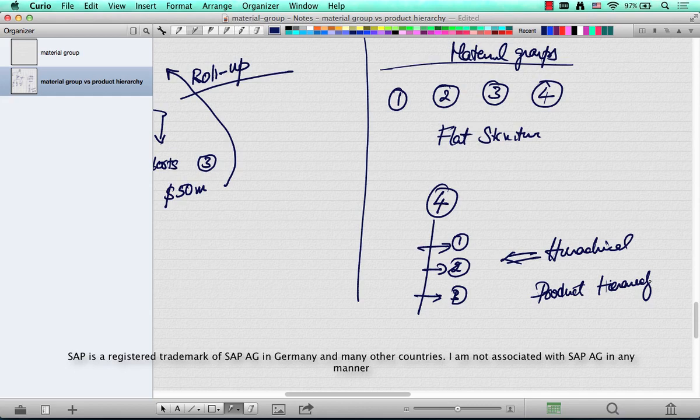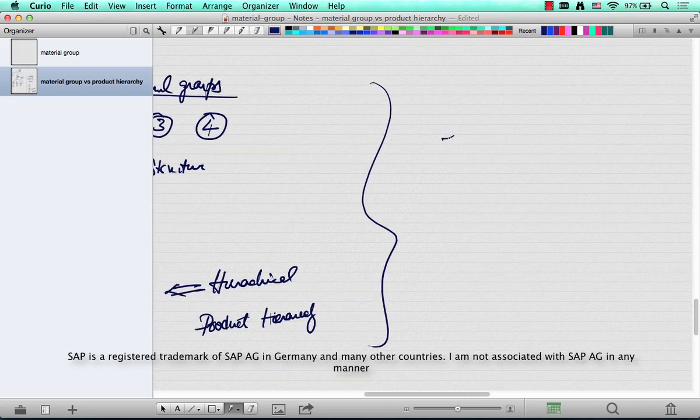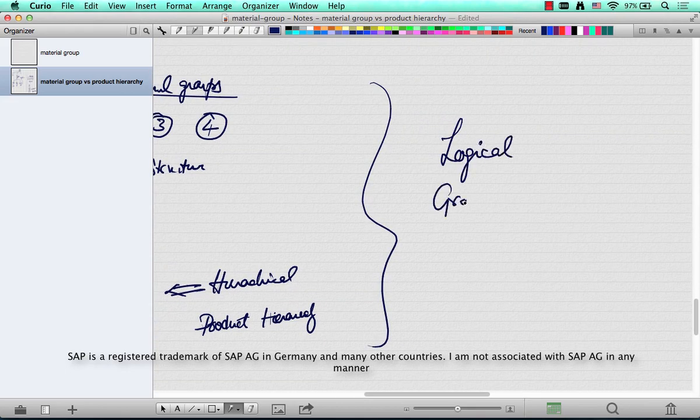Before we go into the differences, both product hierarchies and material groups are logical ways of grouping material masters or materials.